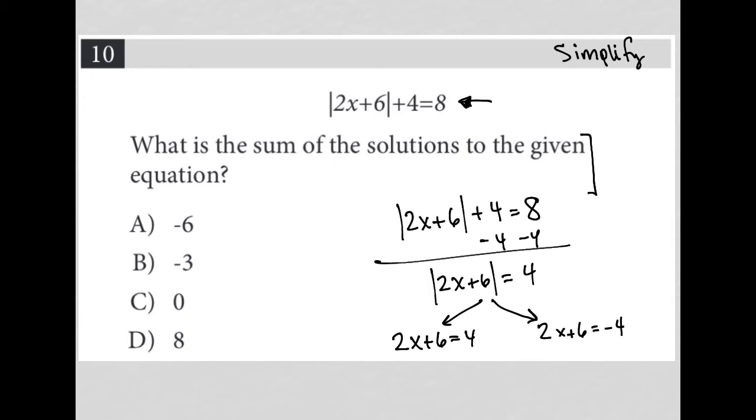And then we solve each of those separately. So subtract 6 from both sides. And I'm left with 2x equals negative 2. Divide by 2. And I have x equals negative 1 as a solution.